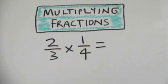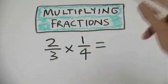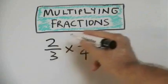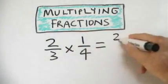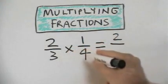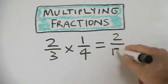We can multiply fractions just like we can other numbers. Here we've got two-thirds times one-fourth. The first thing we do is multiply the top numbers together. So we've got two times one equals two. Then we multiply the bottom numbers together, and we find that three times four equals twelve.